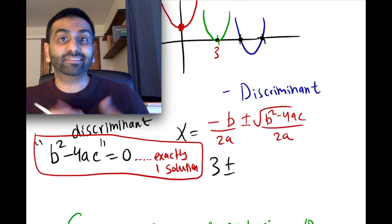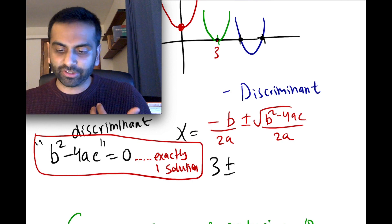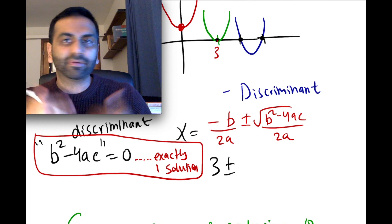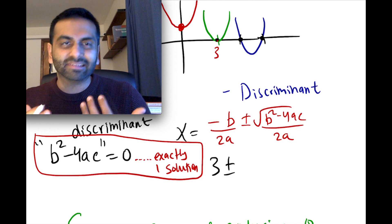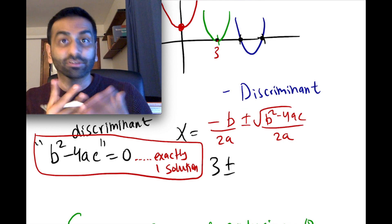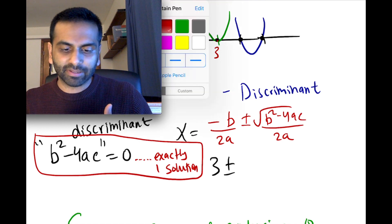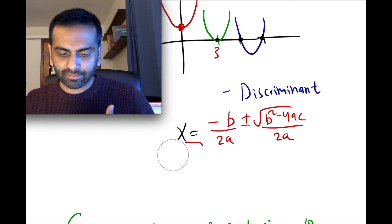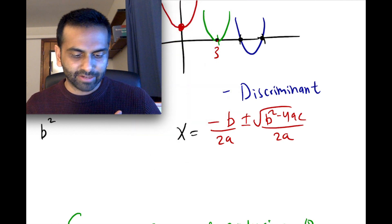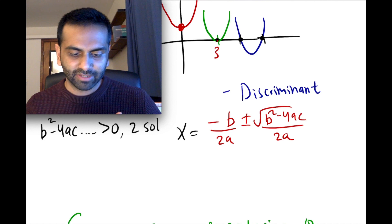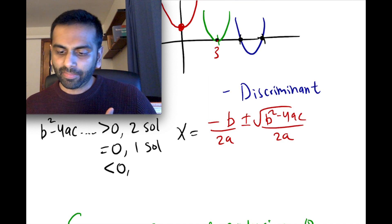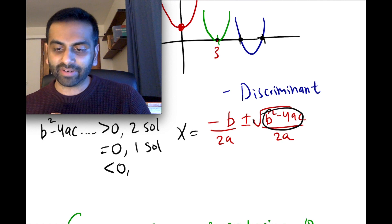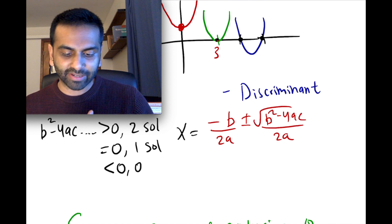If the discriminant is positive, that's where you have two solutions — the square root of that positive number is still a positive number, and you're adding and subtracting something, giving two solutions. To summarize: if the discriminant b squared minus 4ac is positive, there are two solutions; if it equals zero, there is one solution; and if it's negative, that means there's a negative inside the square root, which is not a real number, so in that case you have zero solutions.